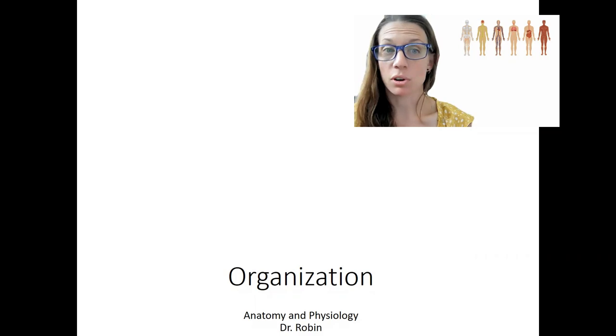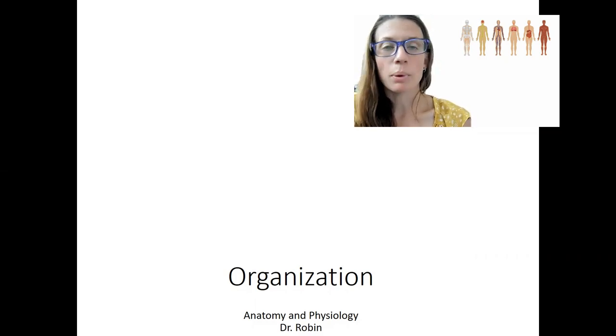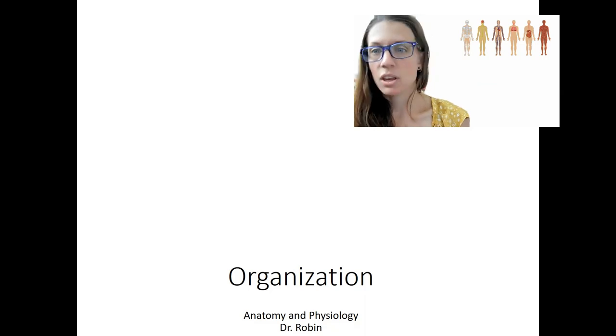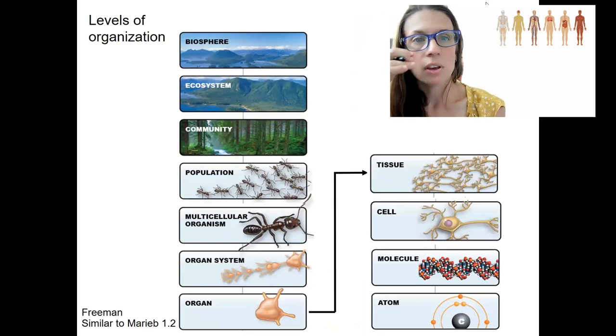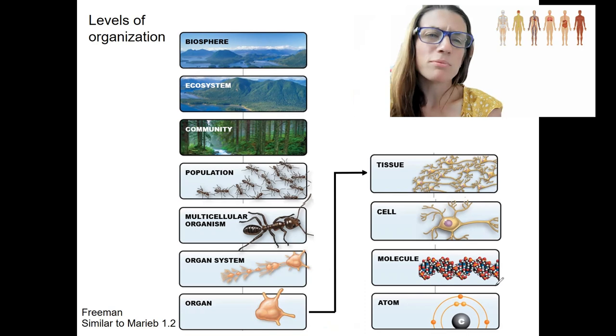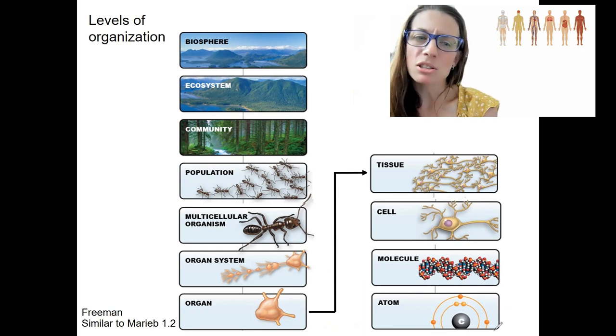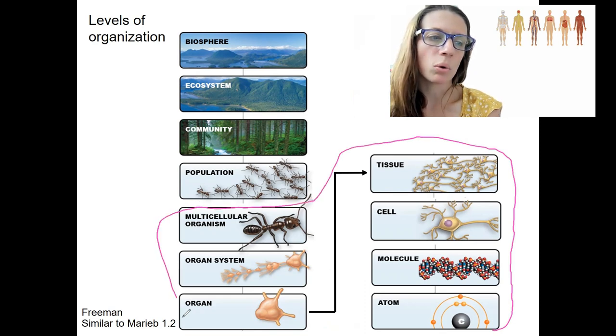One is different levels of this organization. So our bodies are designed at different structural levels that go from an atom all the way up to an organism. So here's a visual of that. Levels of organization in biology. We will be focusing mostly, we'll talk about atoms a bit, so I'm going to include that. Mostly molecules up to the multicellular organism level.